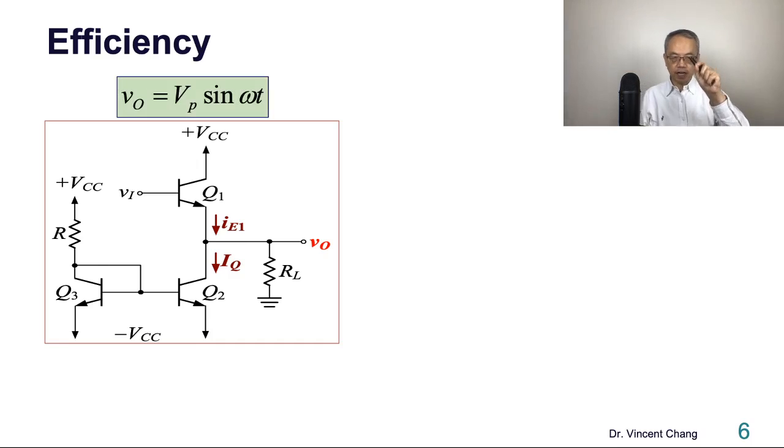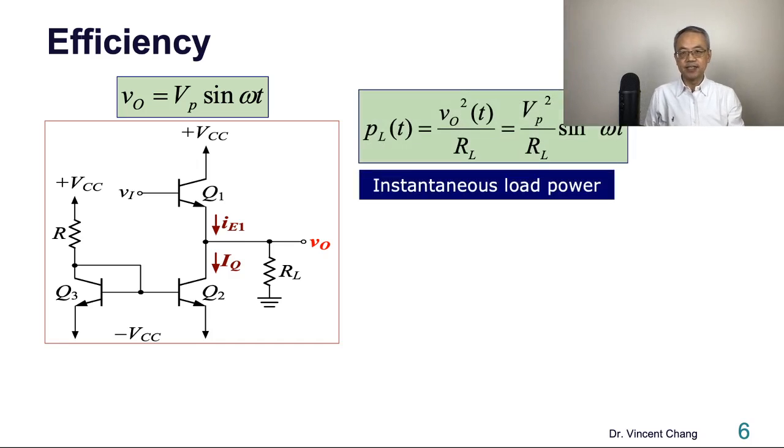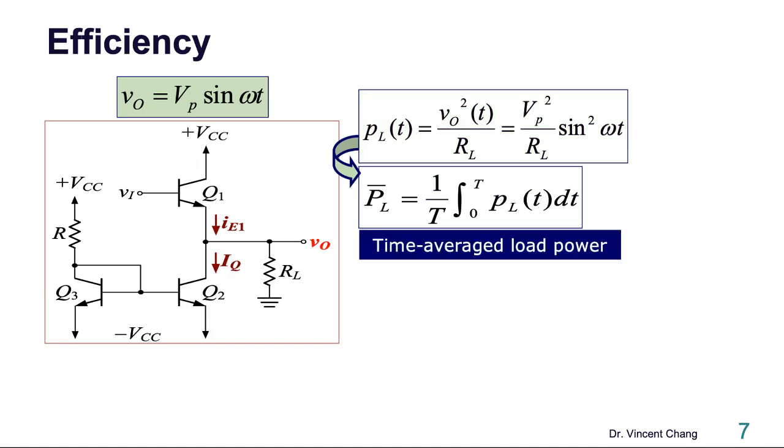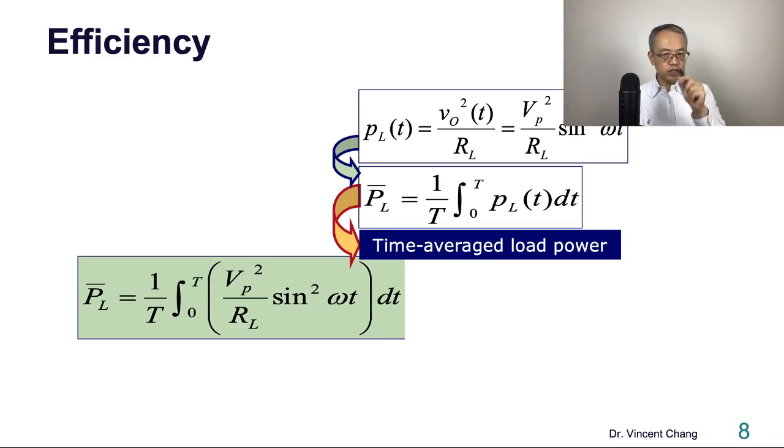So now let's assume a sinusoidal output signal with an amplitude of VP. So then you can have an instantaneous load power. So VO squared divided by RL and just plug in. So the lowercase p is the instantaneous load power. So the capital P with the bar on the top, it's the time-average load power. So you just take the time integration, the integration over with respect to time over the whole period and divide by the period.